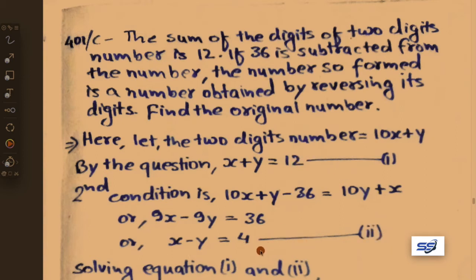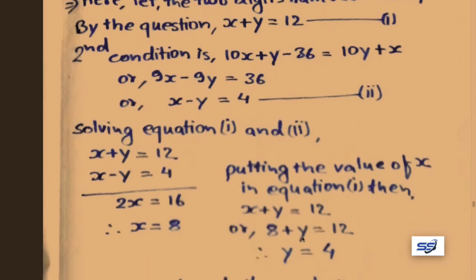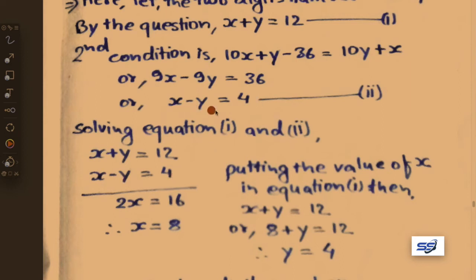Solving equations 1 and 2: adding them together, x plus y plus x minus y gives 2x equals 12 plus 4 equals 16. Therefore x equals 8.